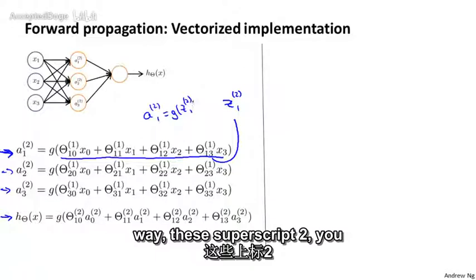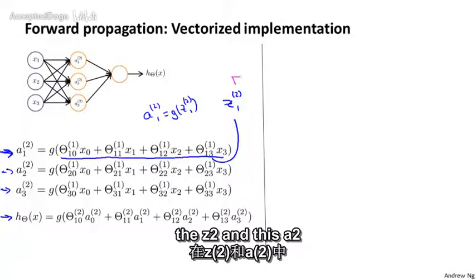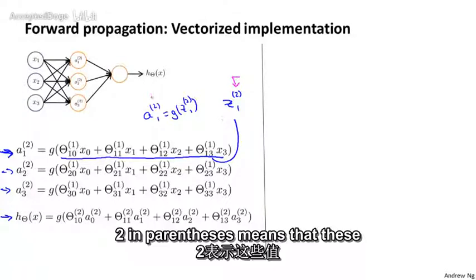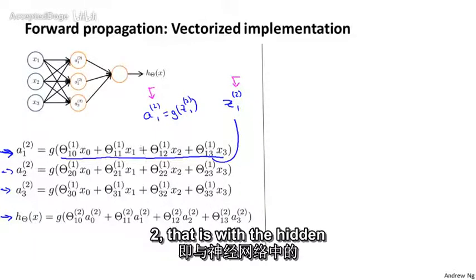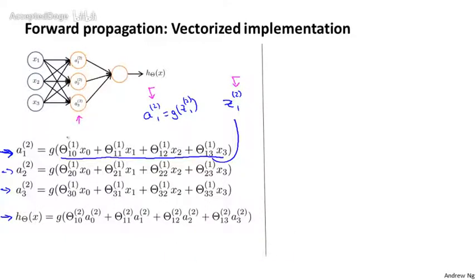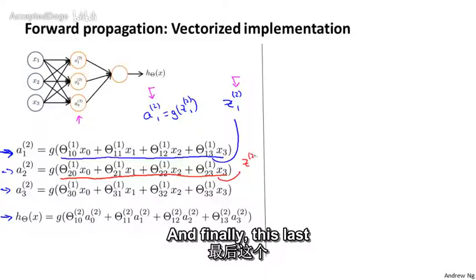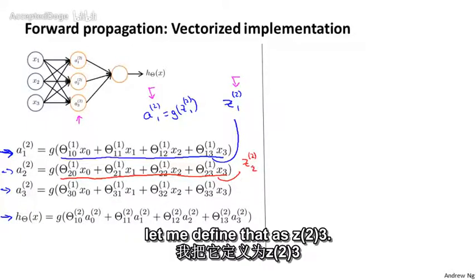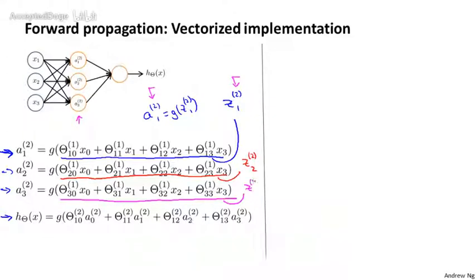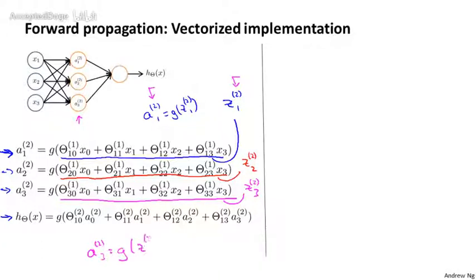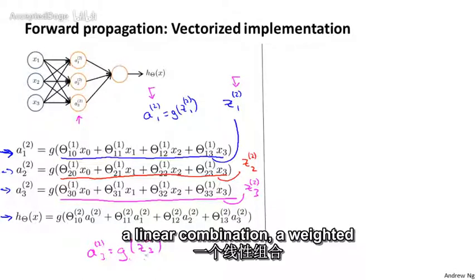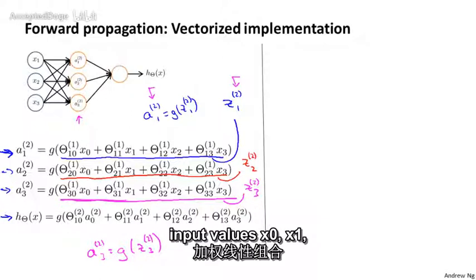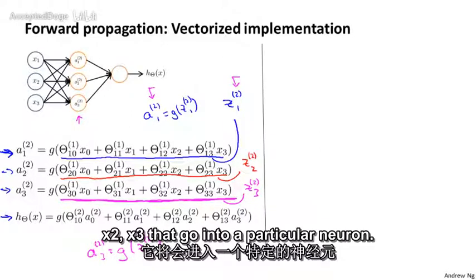The superscript 2 in parentheses means that z2 and a2 are values associated with layer 2 — that is, the hidden layer in the neural network. Similarly, I'm going to define this next term as z22, and finally this last term as z23, so that a23 equals g of z23. So these z values are just a weighted linear combination of the input values x0, x1, x2, x3 that go into a particular neuron.